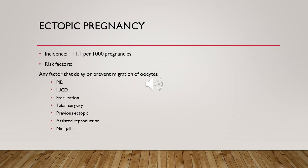Risk factors include any factor that delays or prevents migration of the oocyte, such as pelvic inflammatory disease, which can be complicated by adhesions that delay migration and lead to implantation of the fertilized ovum inside the fallopian tube. Other risk factors include intrauterine contraceptive device, sterilization — with incidence of sterilization failure 1 in 200, and if it fails, the pregnancy is most likely ectopic — tubal surgery, previous ectopic pregnancy, assisted reproduction, and use of mini-pills.